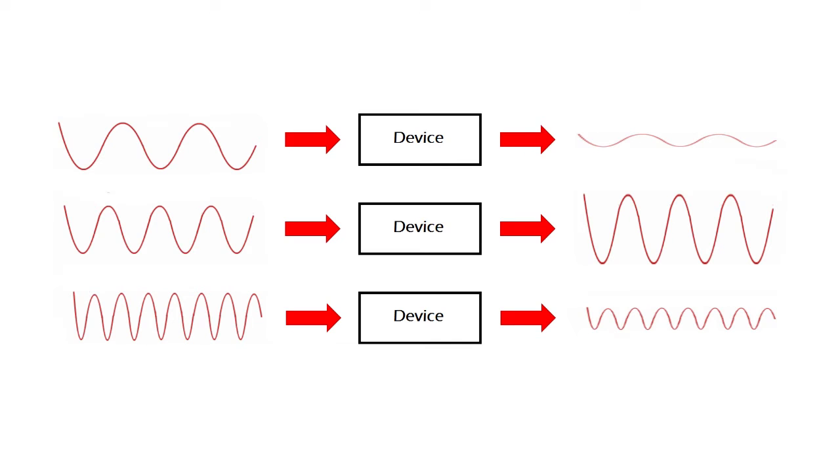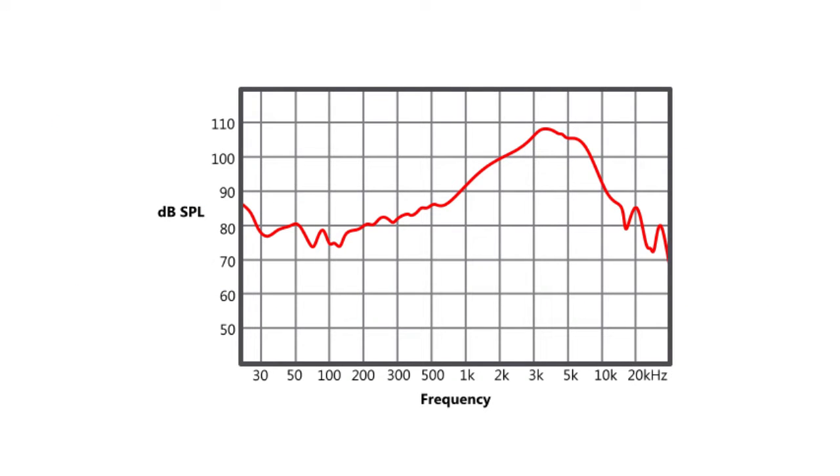The frequency response test consists in introducing sine waves of different frequencies, but all with the same amplitude into the system, and taking note of the amplitude with which they come out. Next, a curve is drawn with the obtained data.